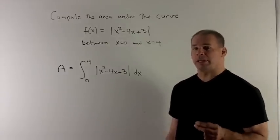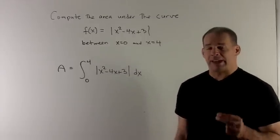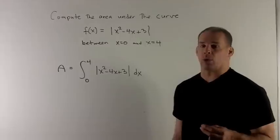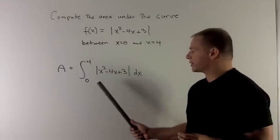Now the problem here is that we have to deal with absolute value signs. Without the absolute value signs, the antiderivative of our function is straightforward. So we have to figure out how to get around this.